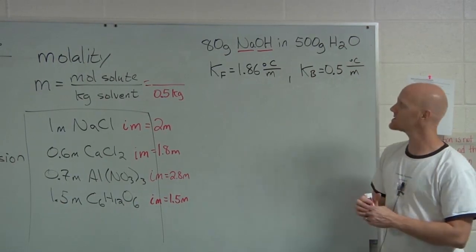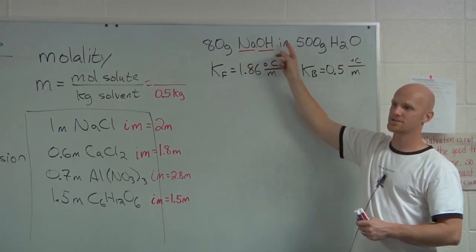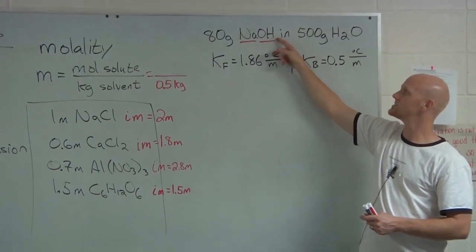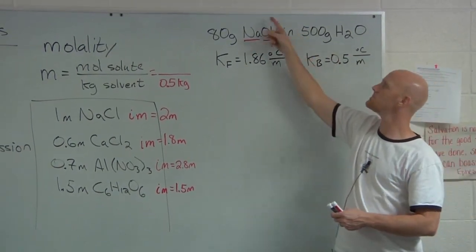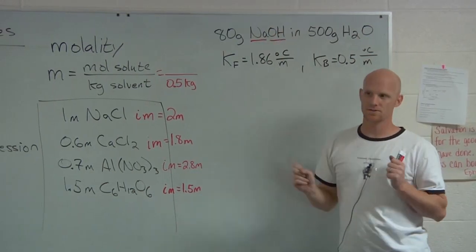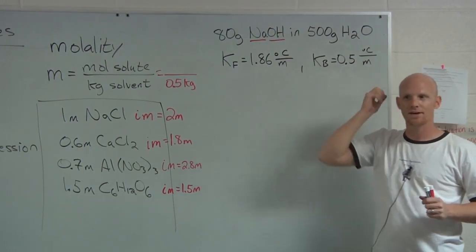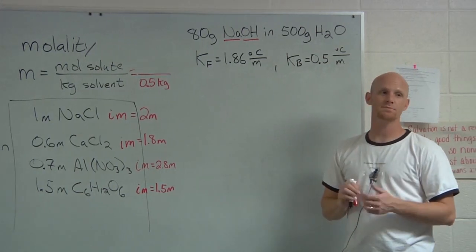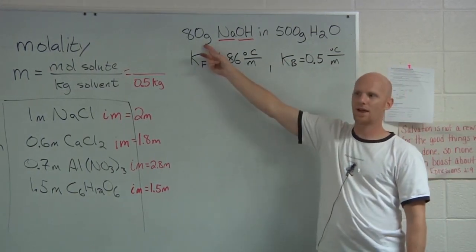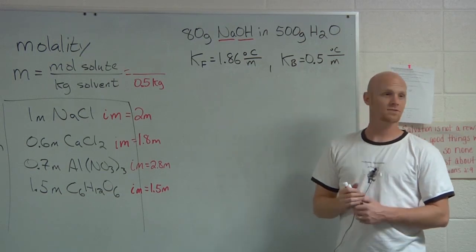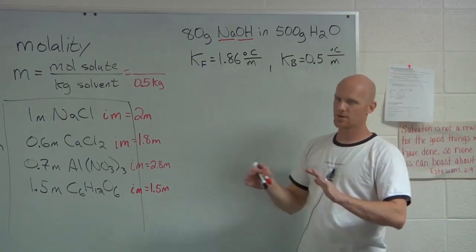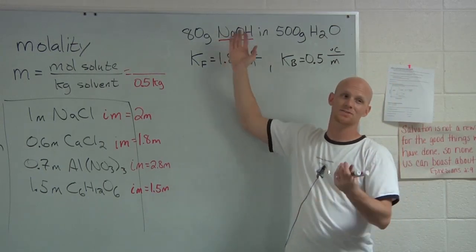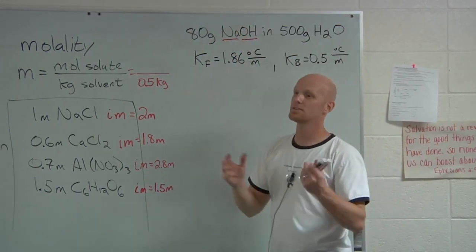But the question is, how many moles of NaOH? Well, I need the molar mass here. Sodium is 23. Oxygen is 16. Hydrogen is 1. And the overall molar mass is 40. So I'm making the math a little nice here. If the molar mass of sodium hydroxide is 40 grams per mole, well, we have 80 grams. So how many moles do we have? We got 2 moles, exactly. So we have exactly 2 moles.